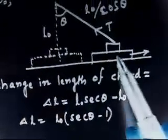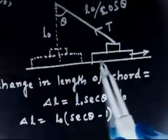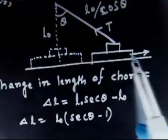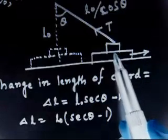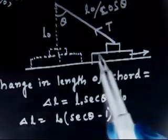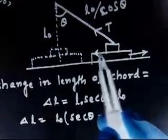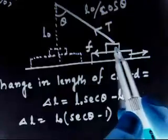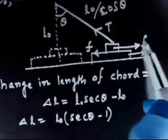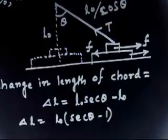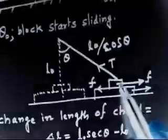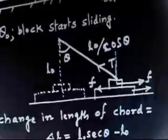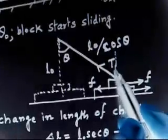Now consider the equilibrium of the block. There is a force trying to pull to one side, so there will be a friction force on the plank. On the block, by Newton's third law, friction acts in the opposite direction. The tension will have a component T cosθ in the vertical direction and T sinθ in the horizontal direction, since this angle is also θ.